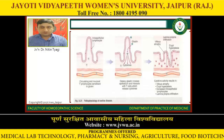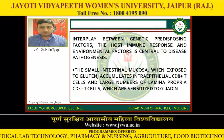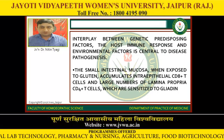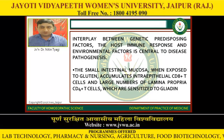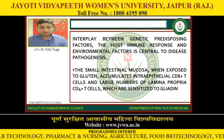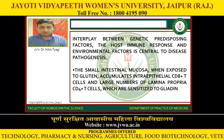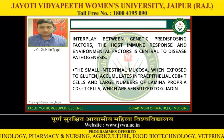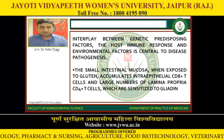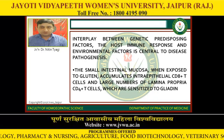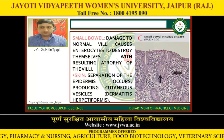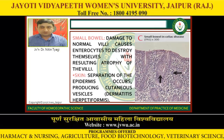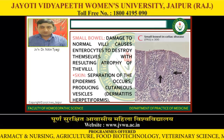These are the changes occurring in celiac disease. The interplay between genetic predisposition factors, the host immune response, and environmental factors is central to disease pathogenesis. The small intestinal mucosa, when exposed to gluten, accumulates intra-epithelial CD8+ T cells and large numbers of lamina propria CD4+ T cells, which are sensitized to gliadin. There is damage to the small bowel — damage to the normal villi causes enterocytes to destroy themselves, with resulting atrophy of the villi.